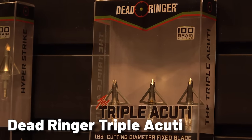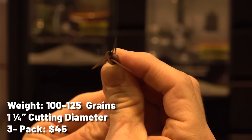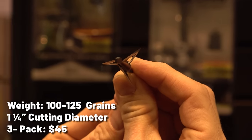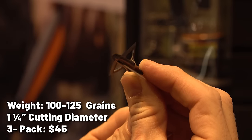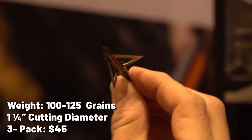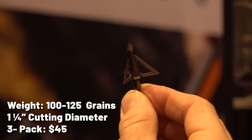Dead Ringer Triple Acuity. Also new from Dead Ringer in the fixed-blade category is the Triple Acuity. The Micro three-blade head has a short profile for improved accuracy and sports a carbon-steel ferrule and ultra-sharp blades with a 1.25-inch cutting diameter. Thanks to a removable brass insert, the Triple Acuity can be converted from 100 to 125 grains with no additional purchases needed. A three-pack will cost $45.